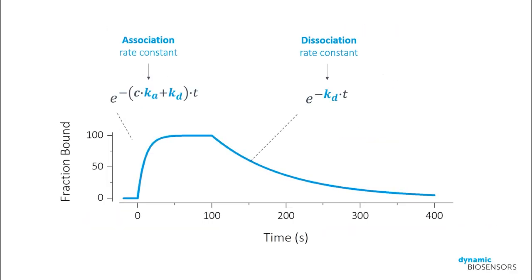In terms of signal change, this is what we can expect for a one-to-one interaction. The number of analyte molecules bound by ligands on the detection spot, the fraction bound, should increase with an exponential time dependence during the association phase and decrease exponentially during the dissociation phase as well. The apparent time constants of the two exponentials reflect the intrinsic rate constants of the interaction, the on and the off rates.